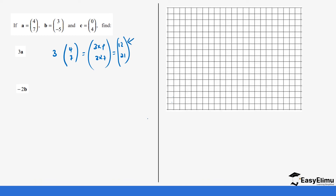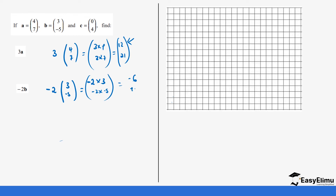Next, find -2b. You can see we now have a negative scalar multiplying a column vector. It's still multiplication, but negative. So it's -2 times (3, -5), which is the same as -2×3 and -2×(-5). This gives us -6, and -2 times -5 gives us positive 10. Remember: negative times negative is positive.